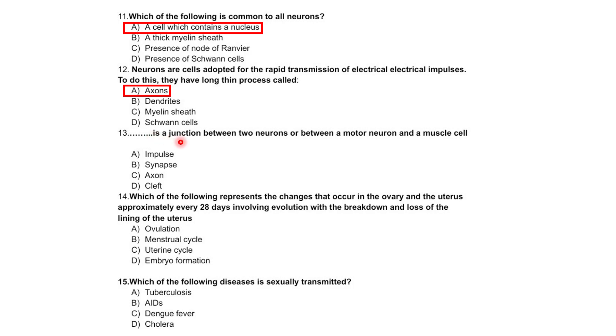A dash is a junction between two neurons or between a motor neuron and a muscle cell. Options: impulse, synapse, axon, or cleft.